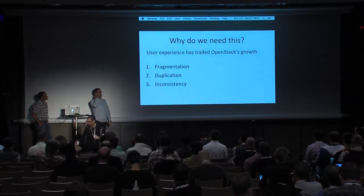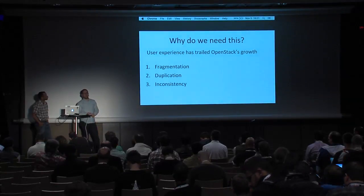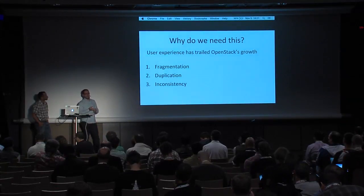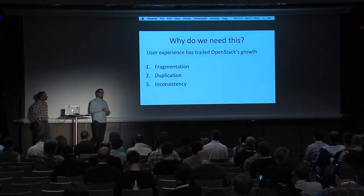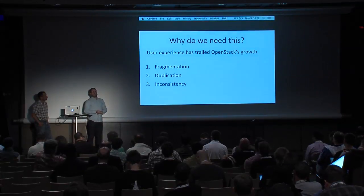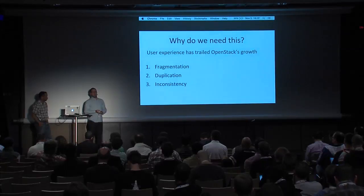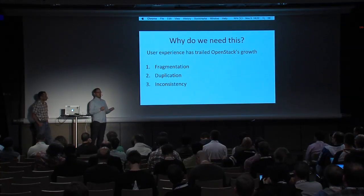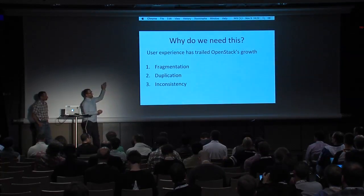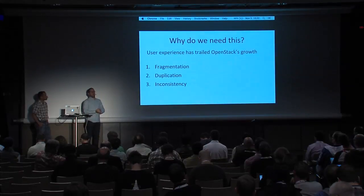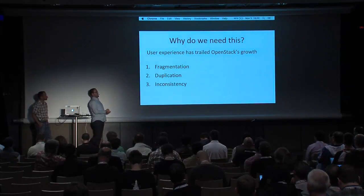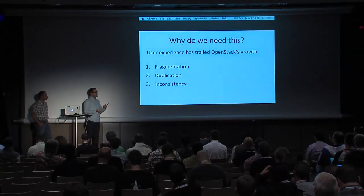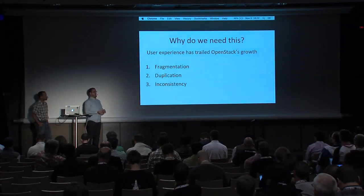What this has led to is that right now we have roughly 30 projects, if you count both OpenStack and the StackForge repos. Each of them has implemented their own client, most of whom have copied things from other places. There's a lot of duplication, fragmentation, and the three main things you see as the project has grown are fragmentation, duplication, and inconsistency in interfaces and usages.